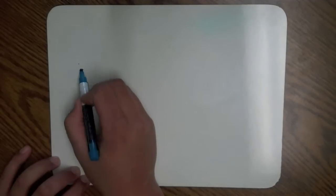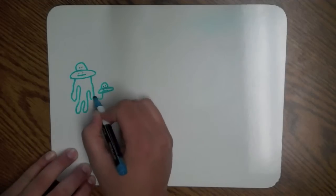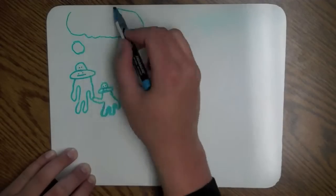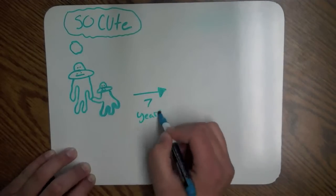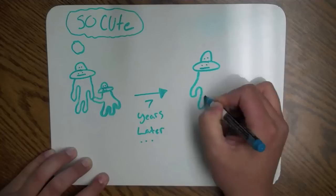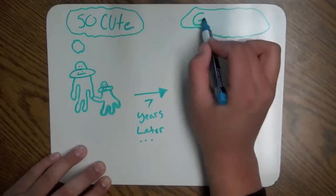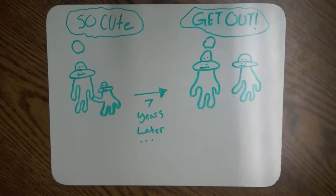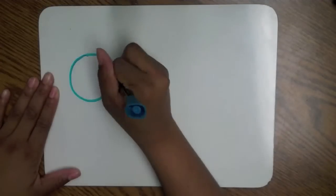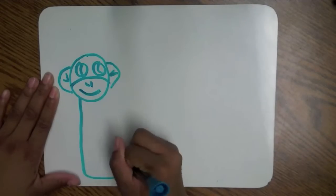Baby orangutans stay with their parents for many years to survive in the wild. The mothers are very patient with their young. When the orangutan turns seven, they have to go out with their mothers to learn to survive on their own in the jungle. Orangutan babies nurse until they are about six years of age.